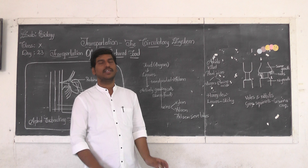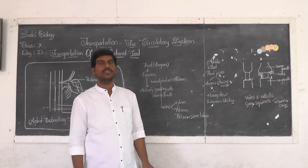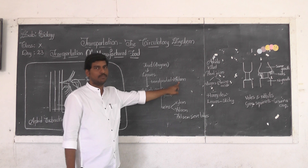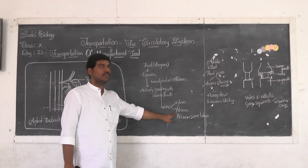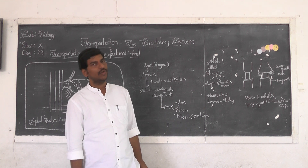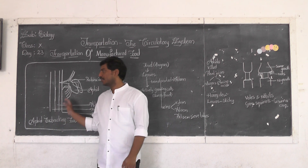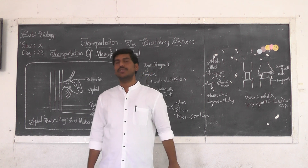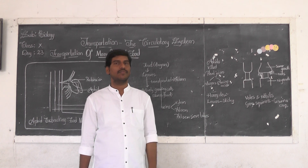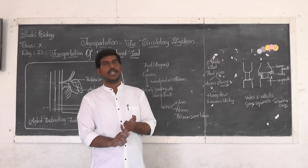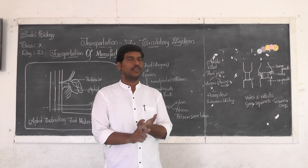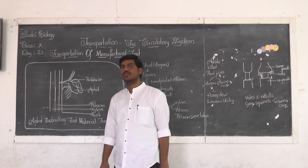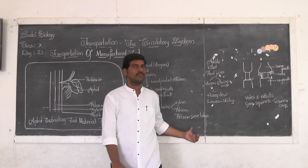Some portion of the food material is transported to the ground tissues and stored there. This transportation is being done by phloem. Phloem plays an important role in transportation of food material. Scientists started to study the experiment being done by aphids. Phloem is a tissue made up of four different types of cells: phloem sieve tubes, phloem companion cells, phloem fibers, and phloem parenchyma. Phloem sieve tubes are the main cells present.